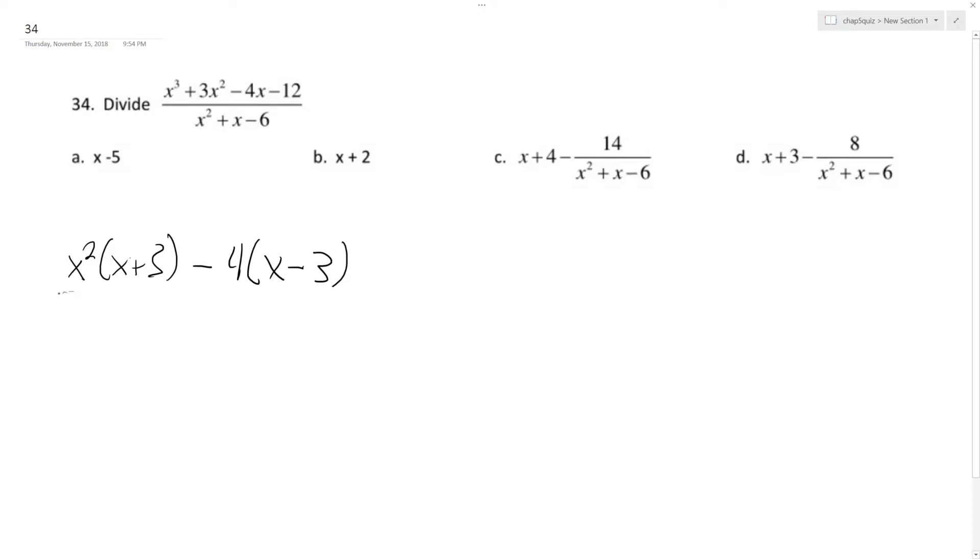I'm working with a numerator here. And then in the denominator I can do an x plus 3, x minus 2. So then on top, sorry, this should be an x plus 3 because I factor out a minus sign.